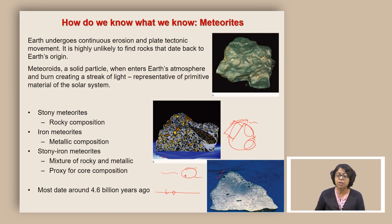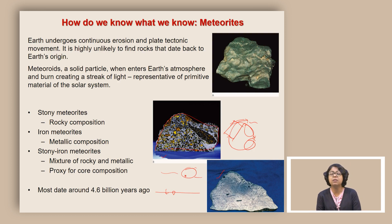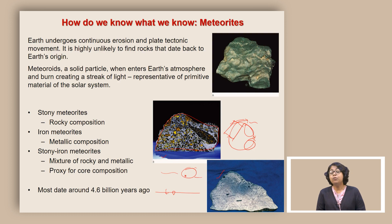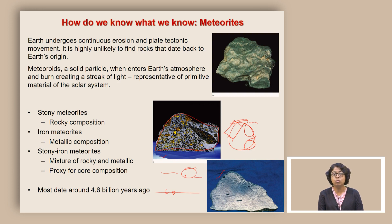By looking at the overall composition and knowing the crustal composition of rock today in the earth, we can calculate what might be remaining at the deepest part of the earth. These meteorites also tell us something about age, because most of those meteorites date to around 4.6 billion years ago, which tells us about the availability of these rocky materials around 4.6 billion years ago in the solar system.